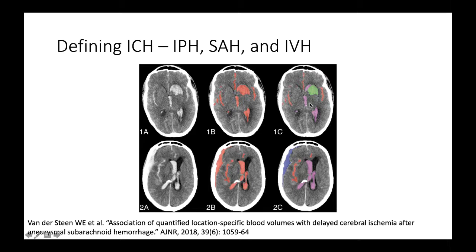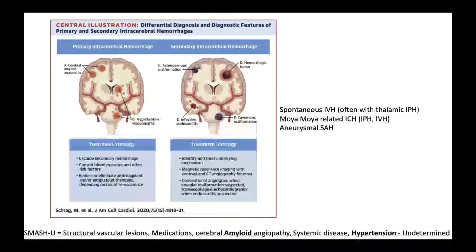These hemorrhage types often come together. If you have an intraparenchymal hemorrhage in the thalamus, for example, it's very common for it to spill over into the third ventricle and cause intraventricular hemorrhage. And once it's in the ventricle, it can recycle through and end up in the subarachnoid space. So ICH really represents a broad array of different types of brain hemorrhage.